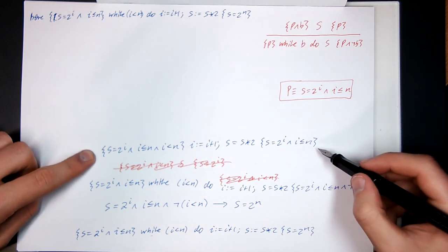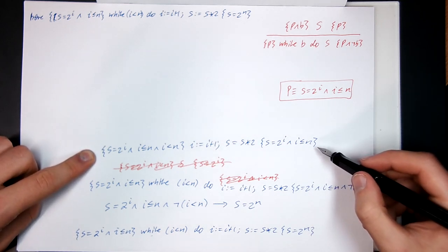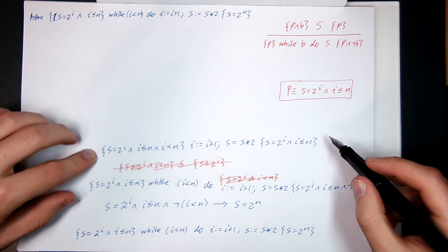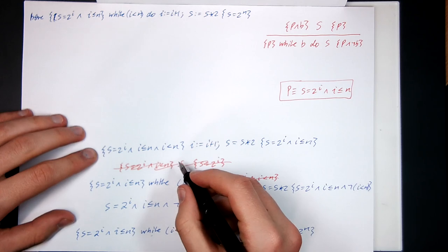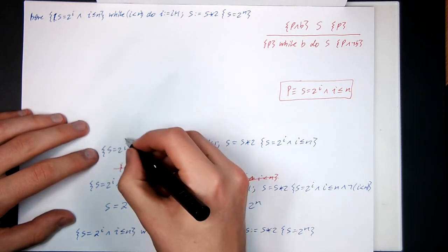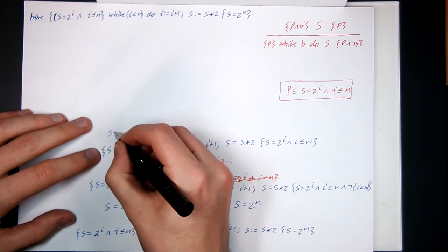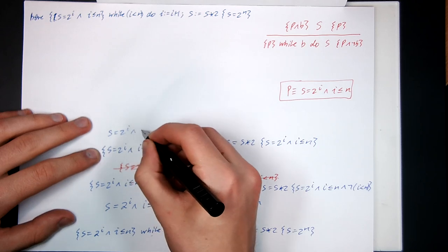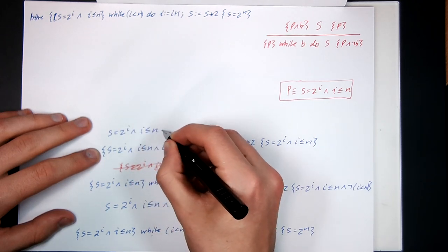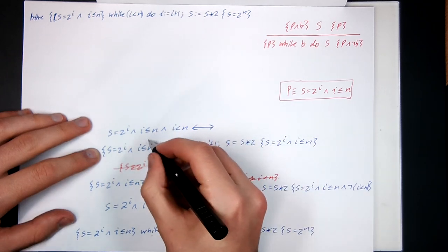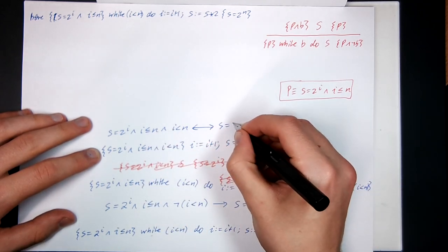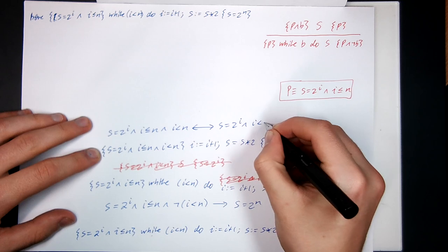So now we've got to prove this statement here. How do we prove this statement? Looks like doing sequencing backwards. We can simplify this a little bit cleaning up the precondition with precondition equivalents as S equals 2 to the I and I less than or equal to N and I strictly less than N is the same as if you just drop this term out because it's redundant.